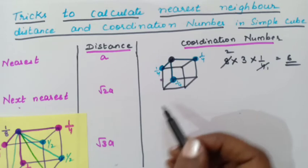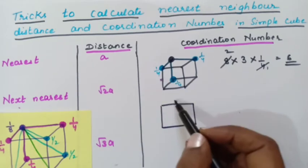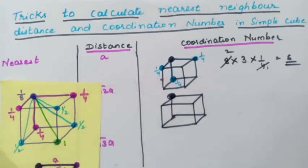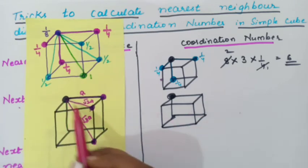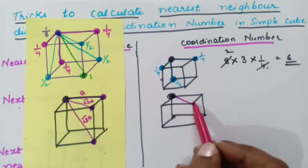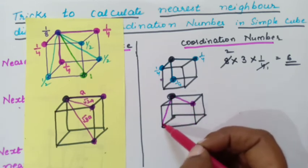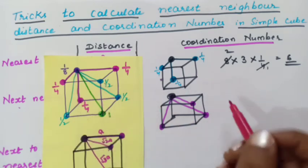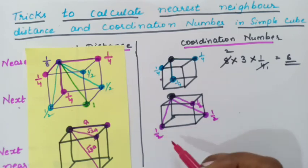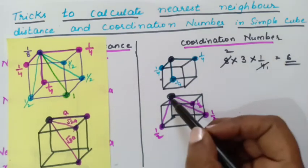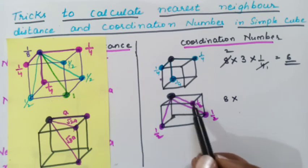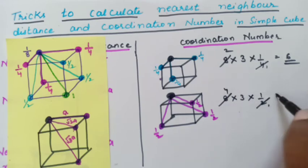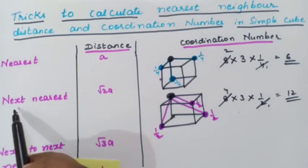Next, let us see the coordination number of the next nearest atom. Draw a simple cube and consider a corner atom. The next nearest atom is at distance root 2A, present on the face diagonal. From here to here, from here to here, and from here to here — these are next nearest atoms. Their contribution is 1/2 each. How many corner atoms are there? 8. Each is in touch with 3 such atoms of contribution 1/2. So: 8 × 3 × (1/2) = 12. The coordination number of the next nearest atom is 12.